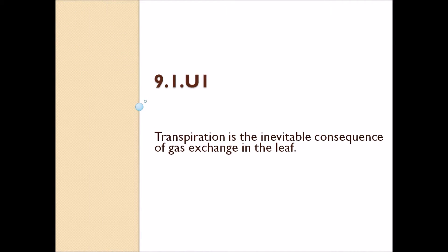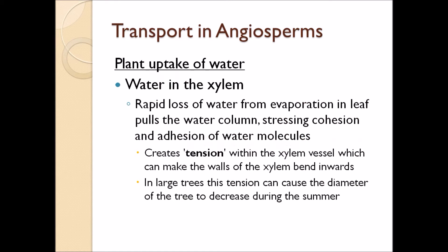Transpiration always happens because of gas exchange. The full pull of water out of the plant is all because of water turning into gas and leaving the leaf — this is very, very important. Water is evaporating from the leaf, pulling all the water molecules behind it, creating tension all the way up the xylem. What's cool is this literally creates suction, like if you suck on a straw. And when you suck on a straw, it can make the straw sometimes cave in. The same thing happens to plants — in very big trees, the amount of water evaporating from hundreds of thousands of leaves is so great that it can actually cause the tree trunk to get skinnier because of the huge suction in all the xylems of that tree.